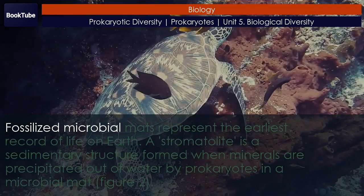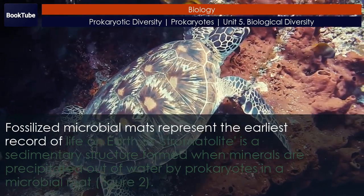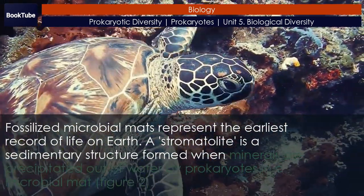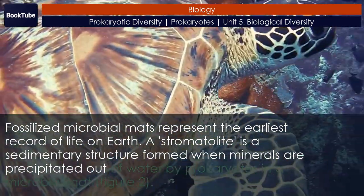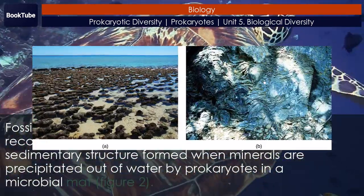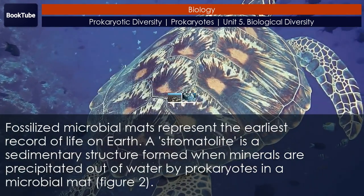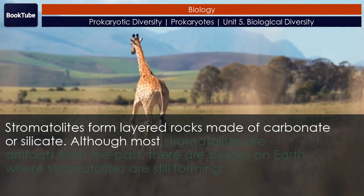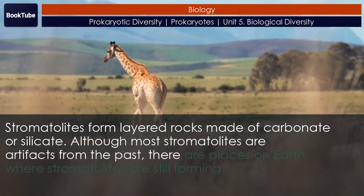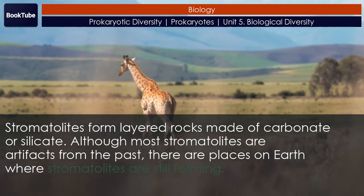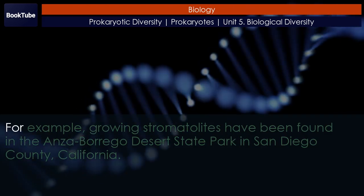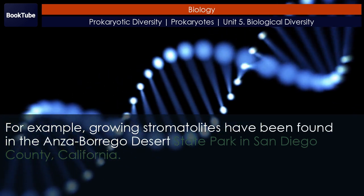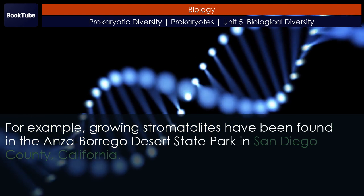Stromatolites. Fossilized microbial mats represent the earliest record of life on Earth. A stromatolite is a sedimentary structure formed when minerals are precipitated out of water by prokaryotes in a microbial mat (Figure 2). Stromatolites form layered rocks made of carbonate or silicate. Although most stromatolites are artifacts from the past, there are places on Earth where stromatolites are still forming. For example, growing stromatolites have been found in the Anza Borrego Desert State Park in San Diego County, California.